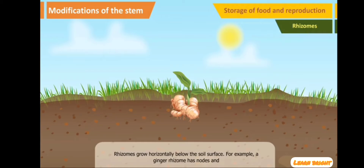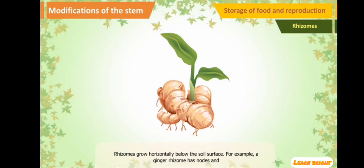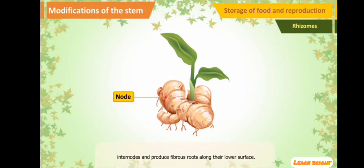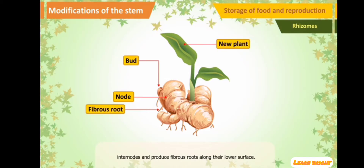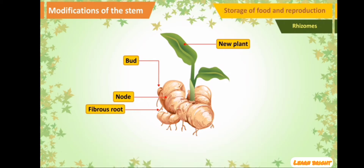Rhizomes grow horizontally below the soil surface. These have nodes and internodes and produce fibrous roots along their lower surface. These stems store food and help in the multiplication of plants. Examples are ginger and iris.